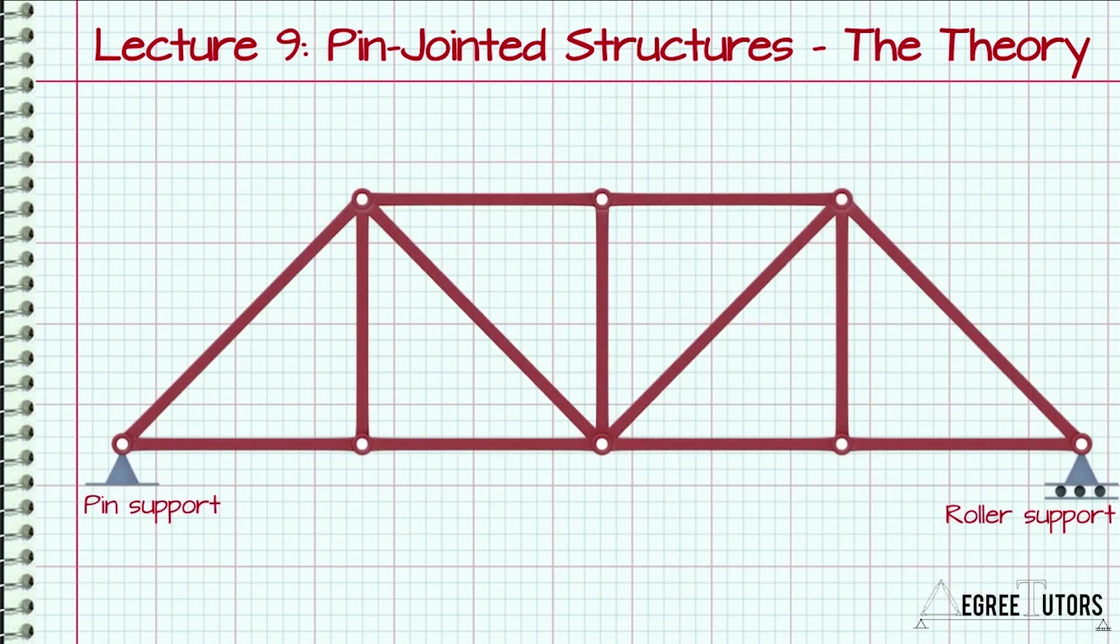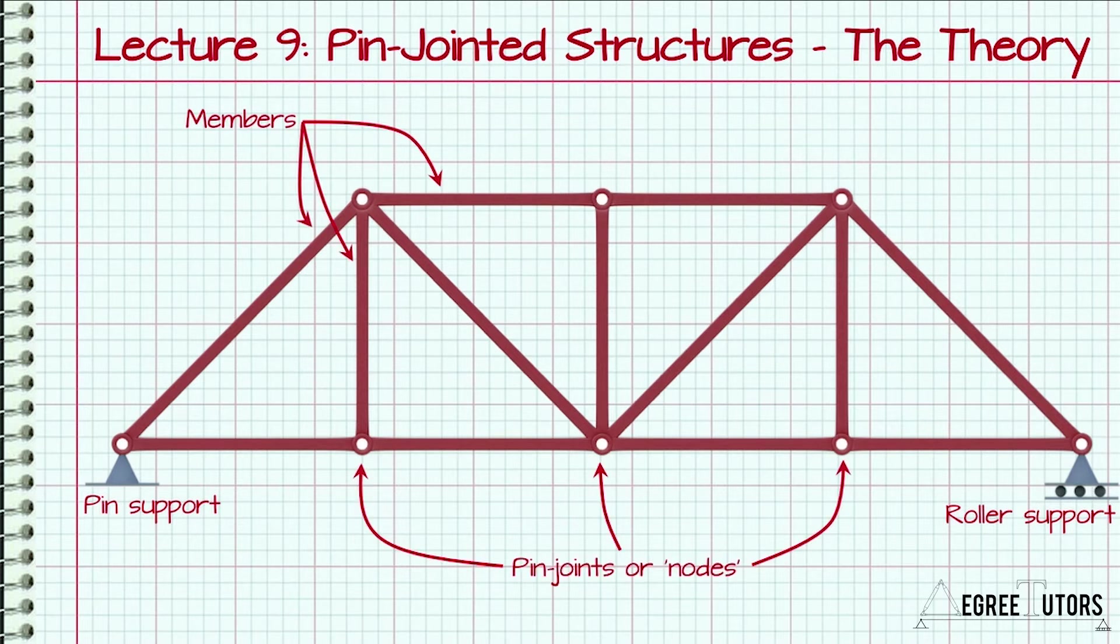As the name suggests, these types of structures can be considered as a combination of simple structural elements or members joined together at pin joints. These pin joints between members are typically called nodes.